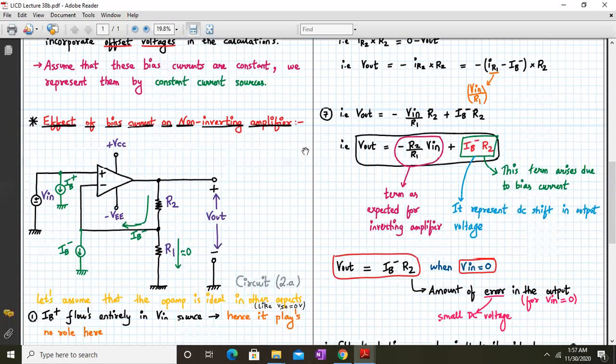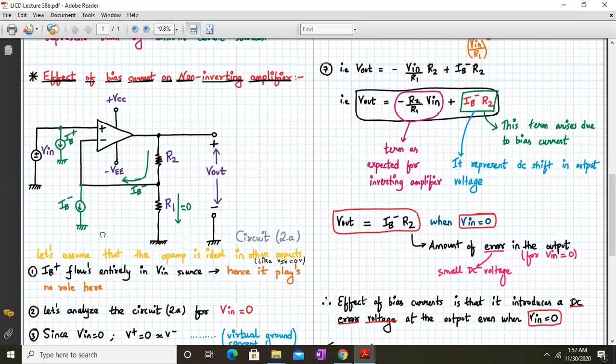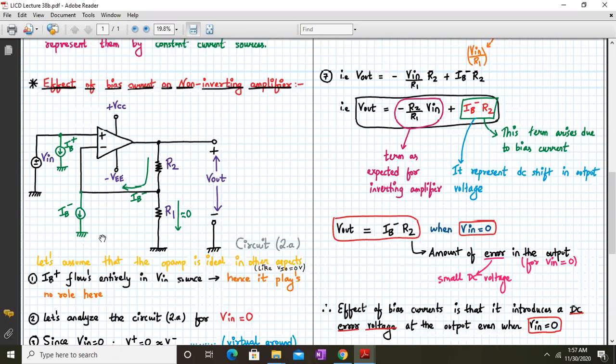Next we'll see the effect of bias current on the non-inverting amplifier. So basically over here, if you see carefully, Ib plus and Ib minus are being allotted to their particular places. Let's assume that the op-amp is ideal in other aspects. That means only the bias current will be effective whereas all the other non-ideal parameters are not affecting this. So only one at a time we are studying. So if you see carefully, Ib plus is flowing entirely in the Vin source, hence it doesn't play any role over here.